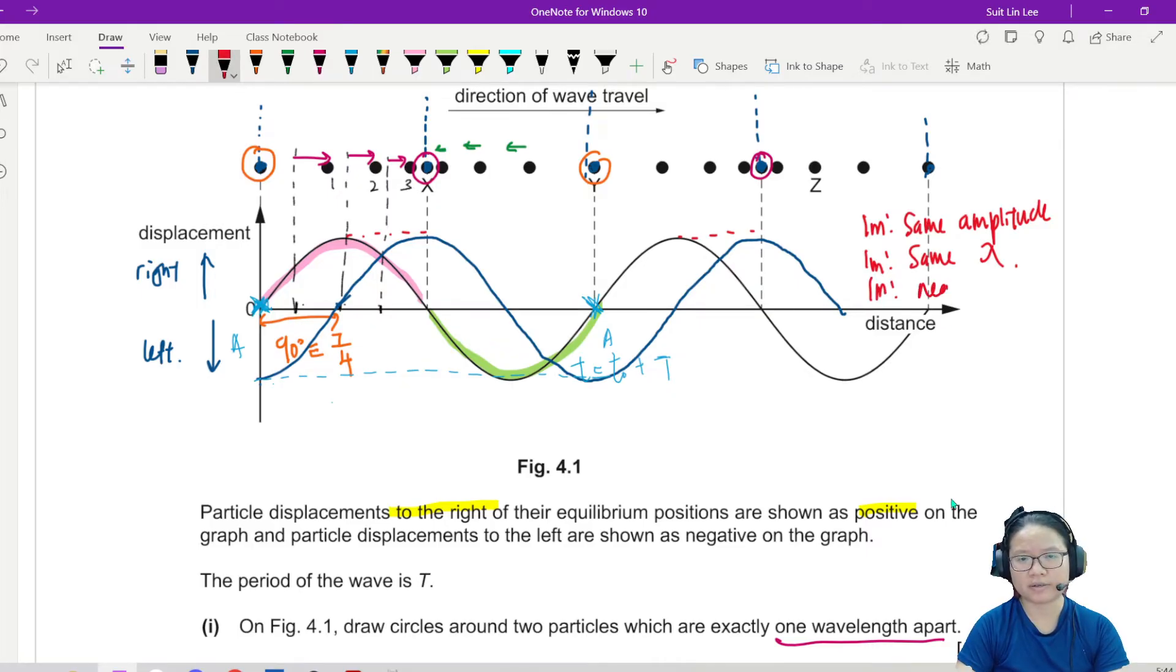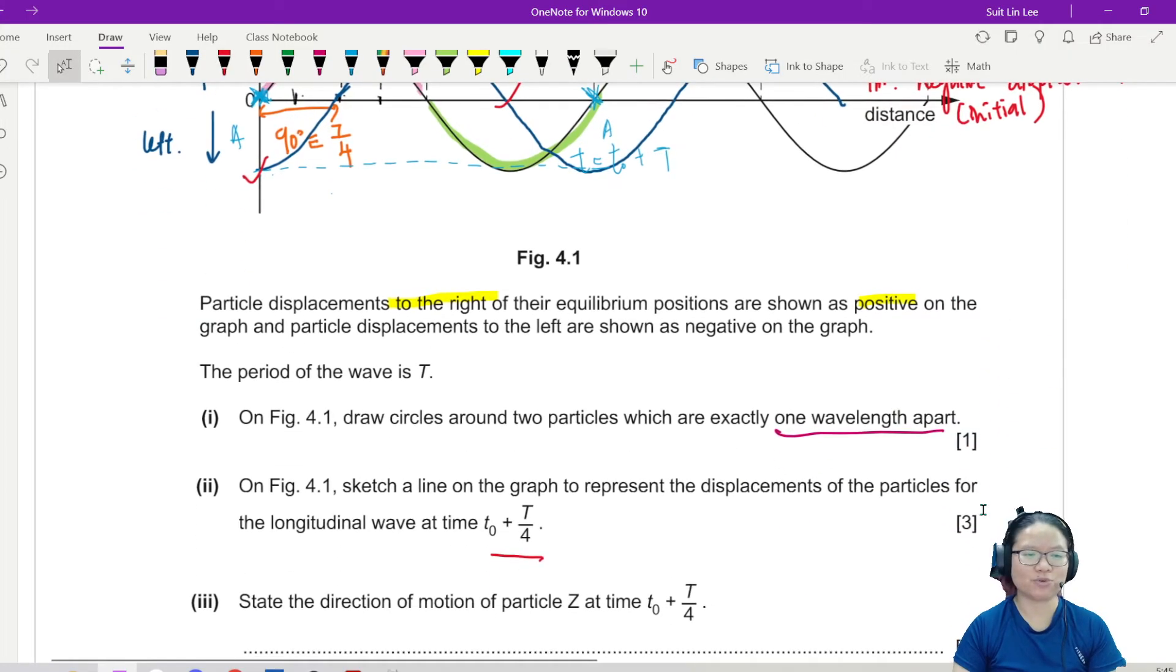Again, as usual, you've got to make sure that the amplitude stays the same. So that will be the last mark. The curve has a negative displacement at zero. Or rather, at zero, so the initial negative displacement. So this one is one mark, amplitude the same is one mark, wavelength the same is another mark. In other words, I shift the graph. It's a translation from left to right by 90 degrees. That's what is going on.